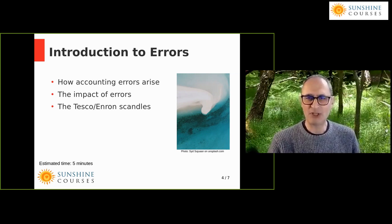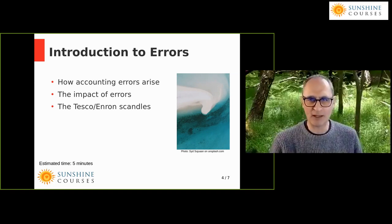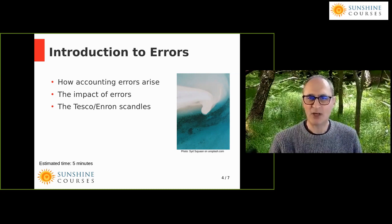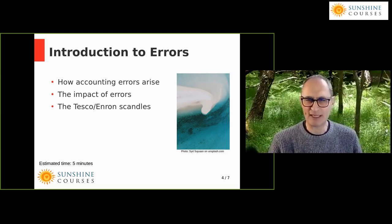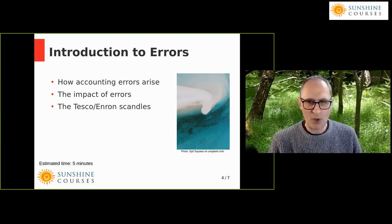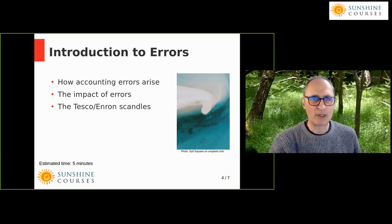Conversely, if the accounts show the café is making losses on cakes or food, we may decide to stop that — when actually if it's simply a misrecording, it could be that we need to increase rather than decrease production. So the impact of errors is quite a big deal. I'm going to run through two huge accounting errors very quickly: one at Tesco and one at Enron.